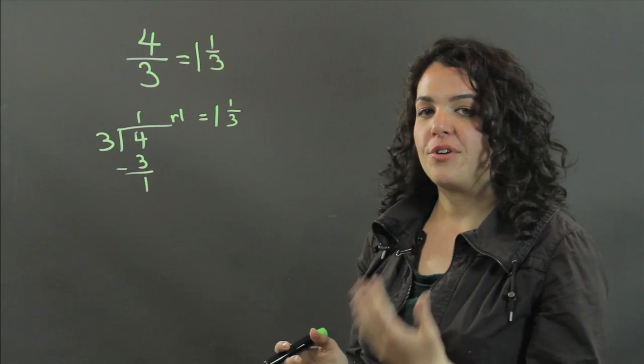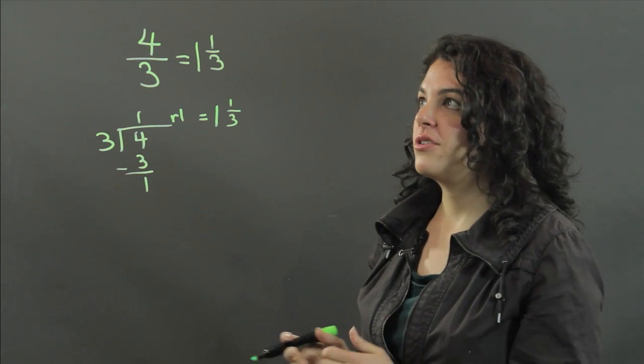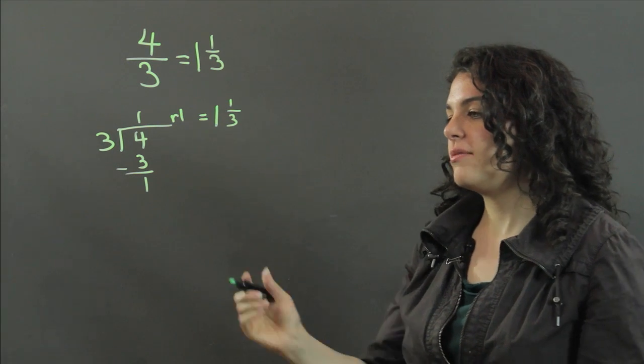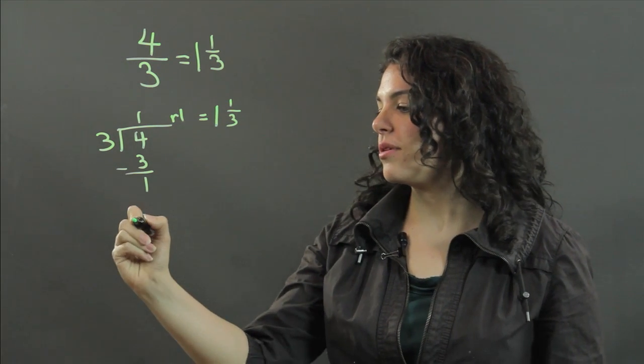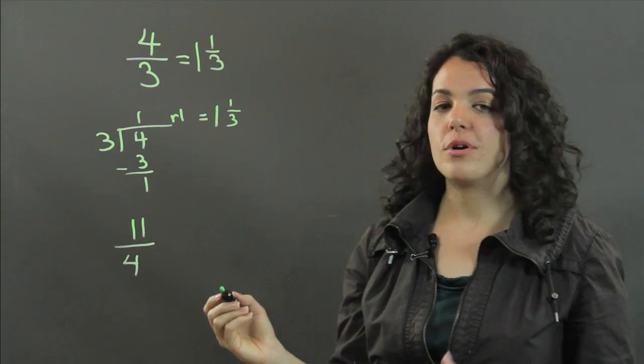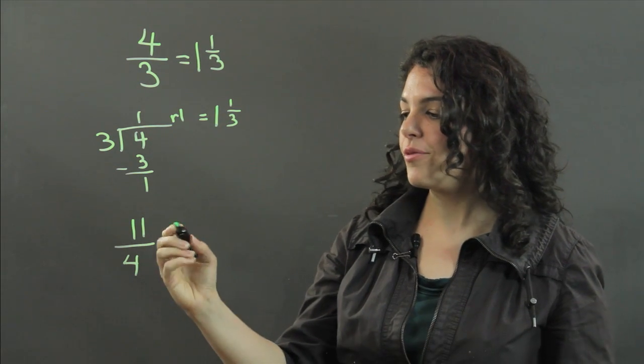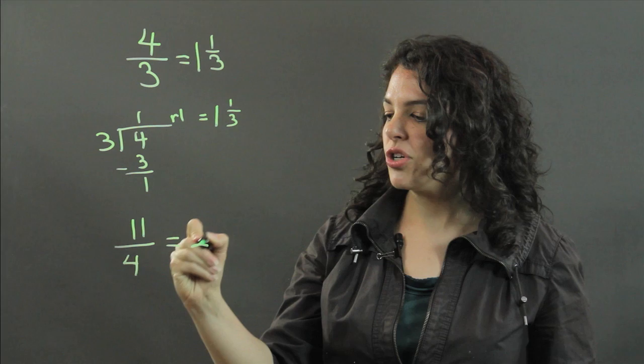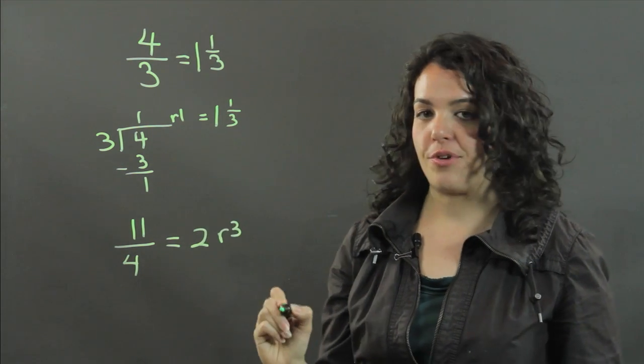So all you have to do is divide and figure out what your remainder is. I'll fire off just two more here for you. Let's try 11 fourths. Now 11 fourths, when we divide 11 by 4, we get 2 with a remainder of 3.